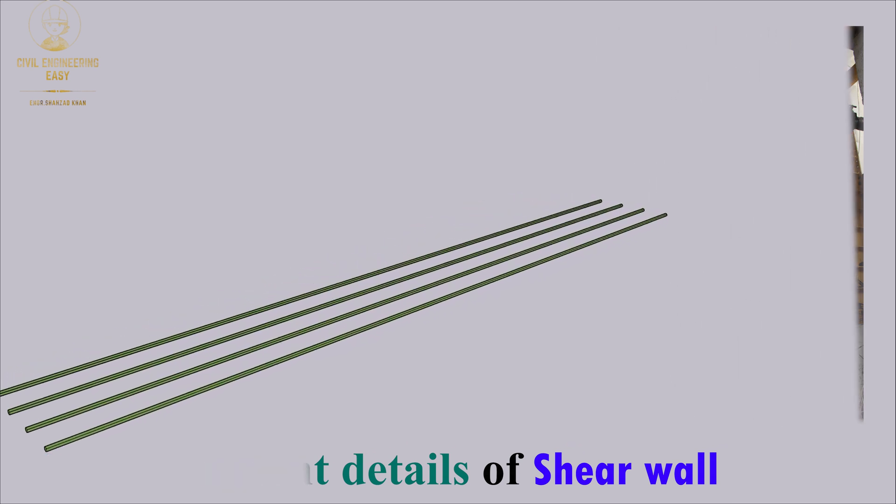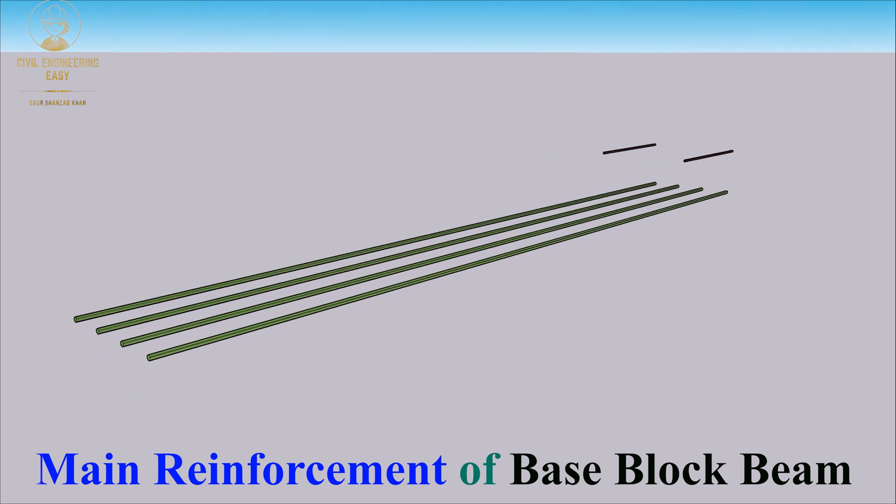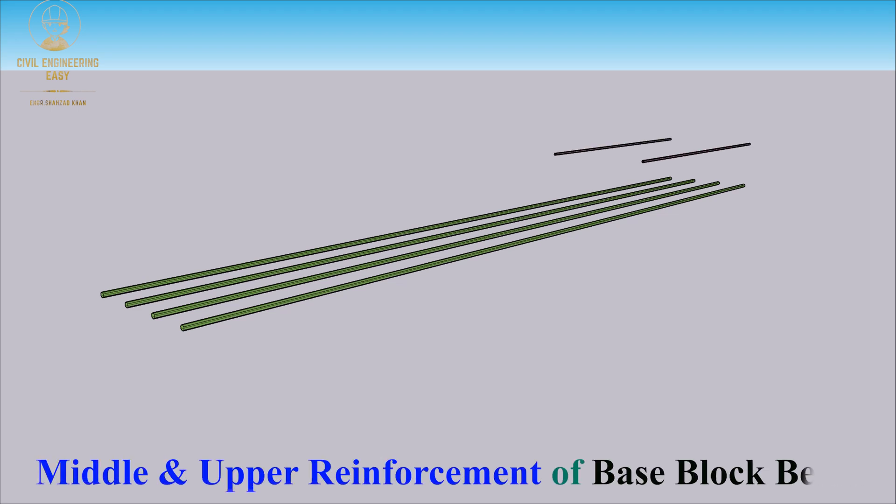There is the main reinforcement of the base block beam, which is crucial for anchoring to the lab floor. This consists of four main bars. Following this, we will explore the middle and upper reinforcement of the base block.